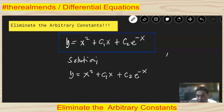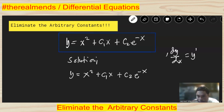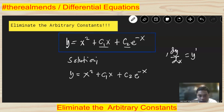An important thing: dy over dx is just the same as y prime. Since there are two constants, the number of constants determines how many times we differentiate — so we need to differentiate it twice.